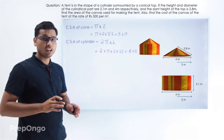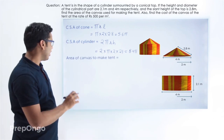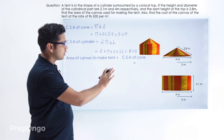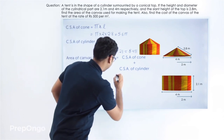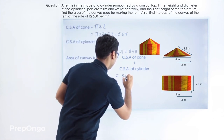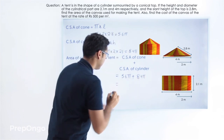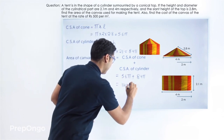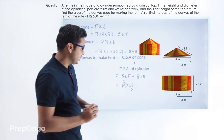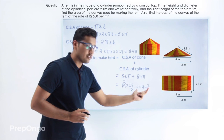Now we can easily find out the total area of canvas by adding the curved surface area of the cone and the curved surface area of the cylinder. The total canvas area equals CSA of cone plus CSA of cylinder, which is 5.6π + 8.4π. Adding these gives 14π. Putting π = 22/7, we get 14 × (22/7) = 2 × 22 = 44 meter square. So the area of canvas needed to make the tent is 44 m².